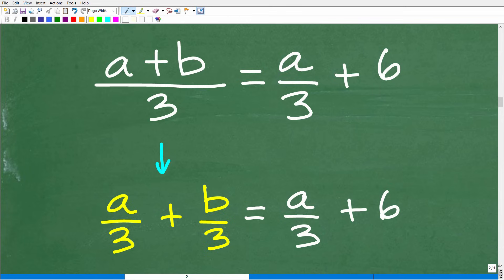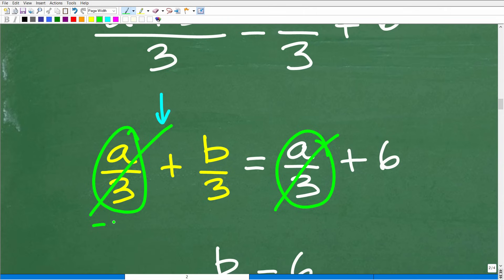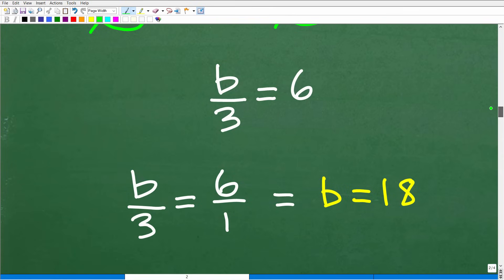Okay, and in this particular case, if we split the fraction, we have a over 3 plus b over 3 is equal to a over 3 plus 6. And you might notice, oh, look, I have a over 3 here and a over 3 here. These kind of basically cross cancel one another. Okay? In other words, I could just subtract both sides of the equation by a over 3 and they go away. Okay? So that leaves me with this lovely equation, b over 3 is equal to 6.